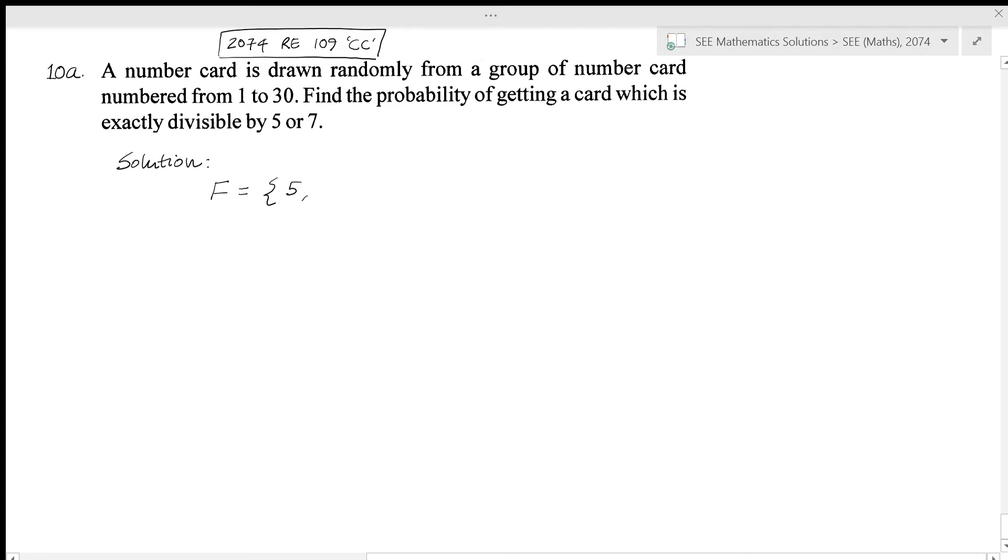So I'll consider that set F. That is 5, 10, 15, 20, 25, 30. And this gives n(F) equals 6. That is, the number of terms that are exactly divisible by 5 from 1 to 30 are 6.